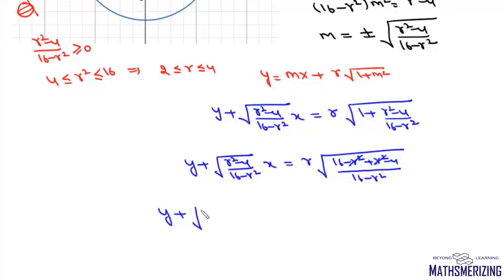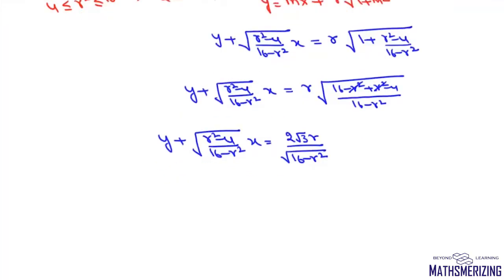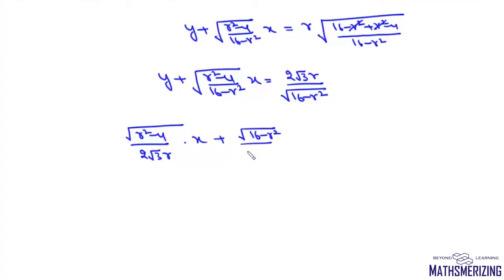We write the common tangent equation in intercept form by dividing through by 2√3·r/√(16 − r²). This gives: [√(r² − 4) / (2√3·r)]·x + [√(16 − r²) / (2√3·r)]·y = 1. This is the equation of the common tangent to the ellipse and circle in terms of variable radius r.